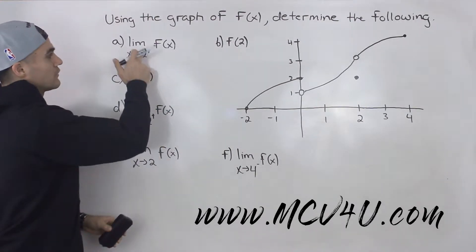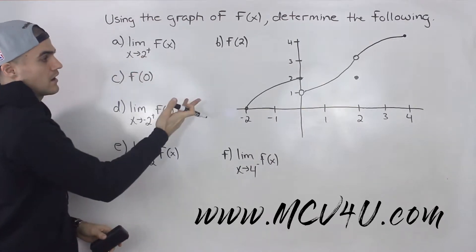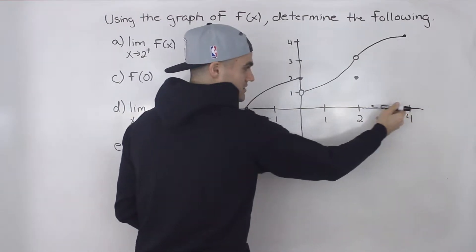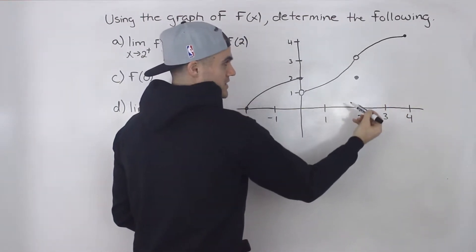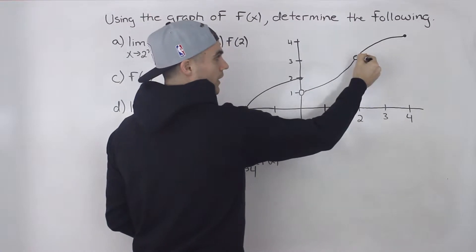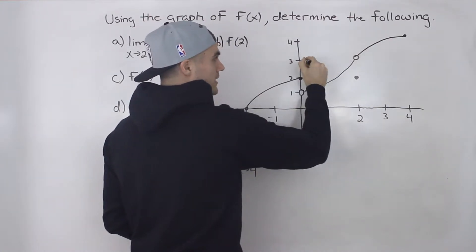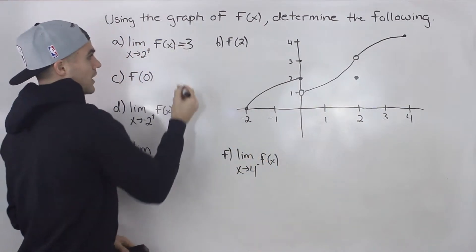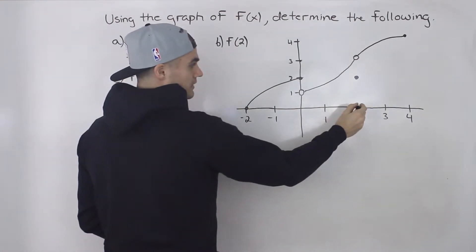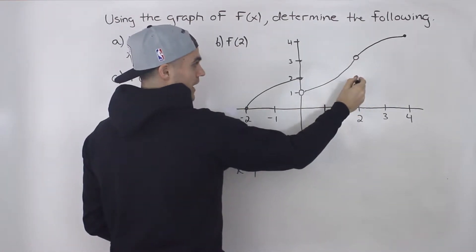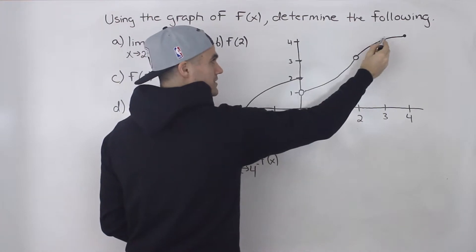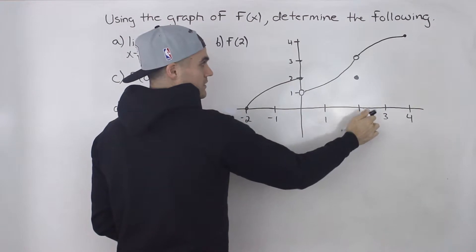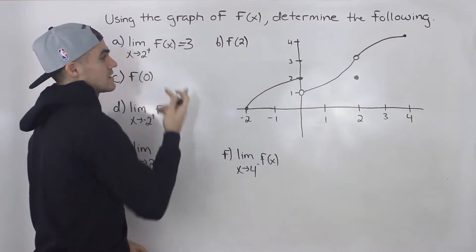Starting off with part a, we have to find the limit as x approaches two from the positive side of the function. As we approach an x value of two from the positive side, what's the y value approaching on the function? It's approaching this hole here, and this hole has a y value of three. So that's the answer to part a.